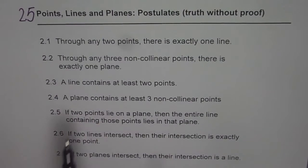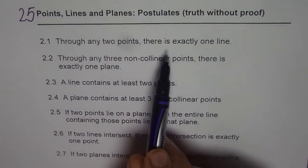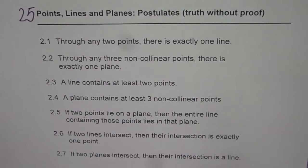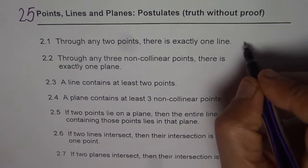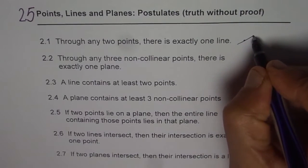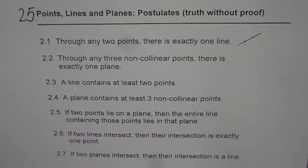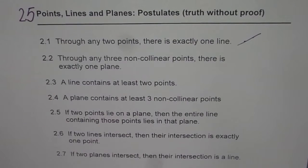Postulate 2.1: Through any two points there is exactly one line. So if you have two points, you can draw only one line through them. This gives the basic definition of a line — a line passes through two points, and only one line can go through both of them.